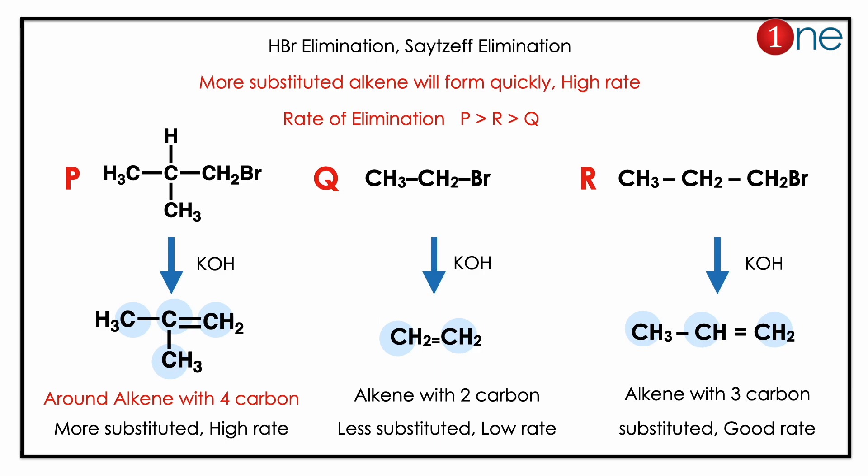The first one, P, has four substitutions; Q has two; and R has three. So the order will be P > R > Q — P has more carbons around the double bond, Q has the least.